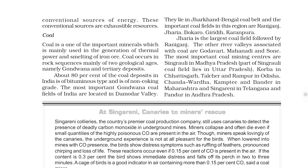There are two coal ages: first is Gondwana and second is Tertiary. Gondwana coal is 200 million years old, found in Peninsular India, and is of better quality. Tertiary coal is 55 million years old, found in Northeast India, and is of low quality because of less time for formation as compared to Gondwana.